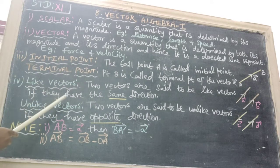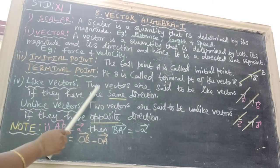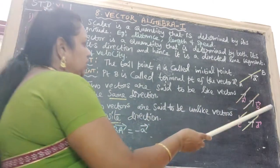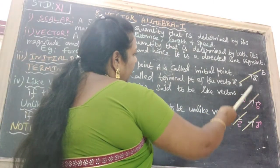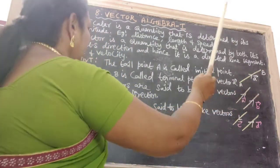Next one is like vectors. Two vectors are said to be like vectors if they have the same direction. We see the two vectors, same direction, A vector and B vector.